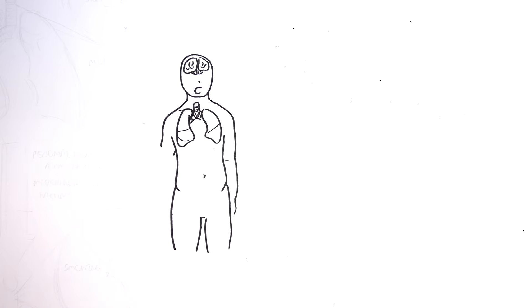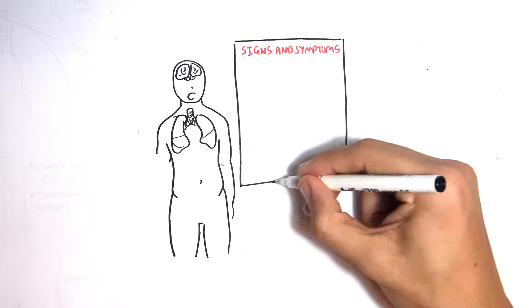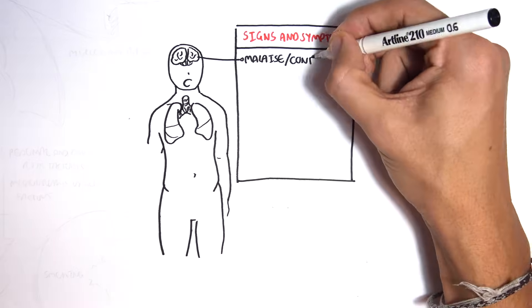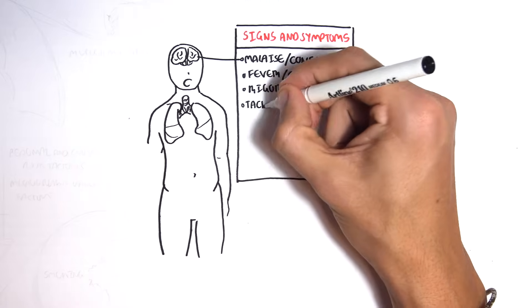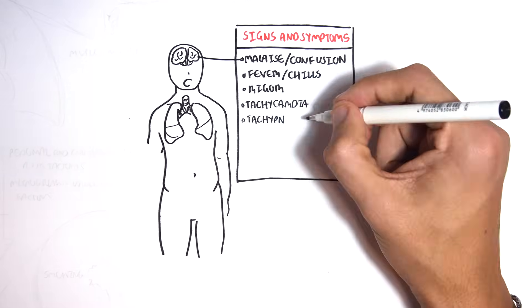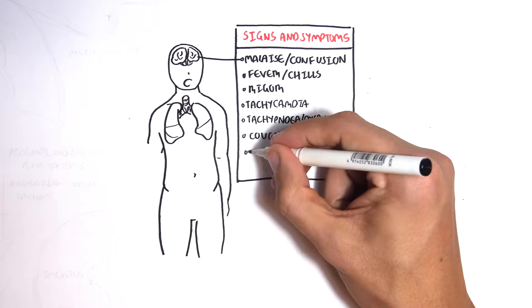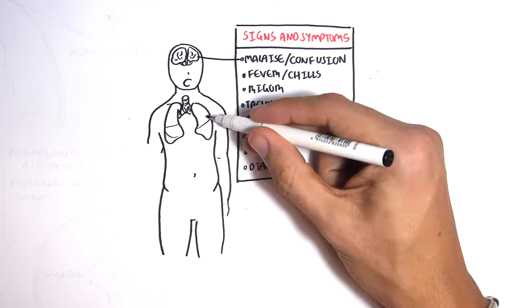Signs and symptoms of pneumonia include malaise, confusion, fever and chills, rigor, tachycardia, tachypnea or dyspnea, cough that can be productive, and vomiting as well as diarrhea.